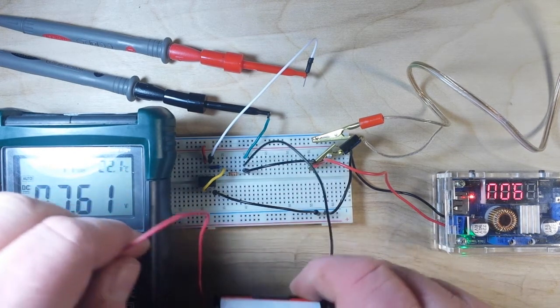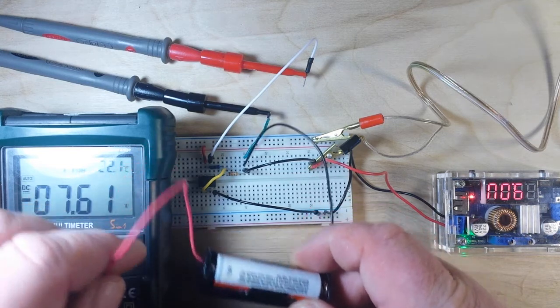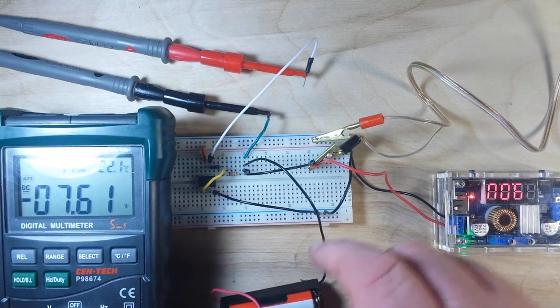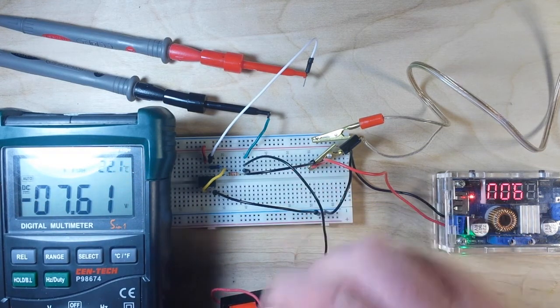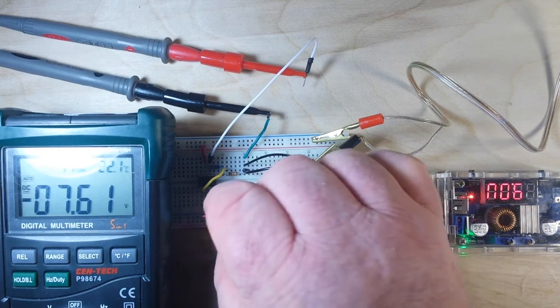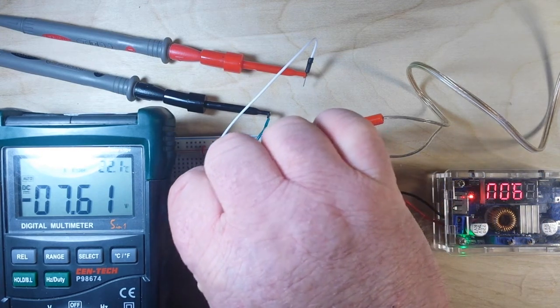So for our voltage input, I just have a double A battery. Its negative goes to ground, and its positive goes to our non-inverting input.